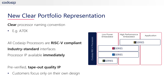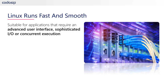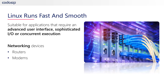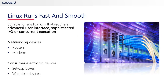That adds a lot of clarity to the portfolio. Are the new 7 series cores able to run an operating system? All of the application processors are designed to run the embedded Linux operating system. We have talked about the hardware requirements for various operating systems in the previous video blog. The reason our customers want to run Linux is typically that their application requires an advanced user interface, communicates through a number of input or output interfaces, or needs to run multiple software threads concurrently. This is very typical for networking devices such as routers or modems, and also for consumer electronic devices like set-top boxes or wearables.